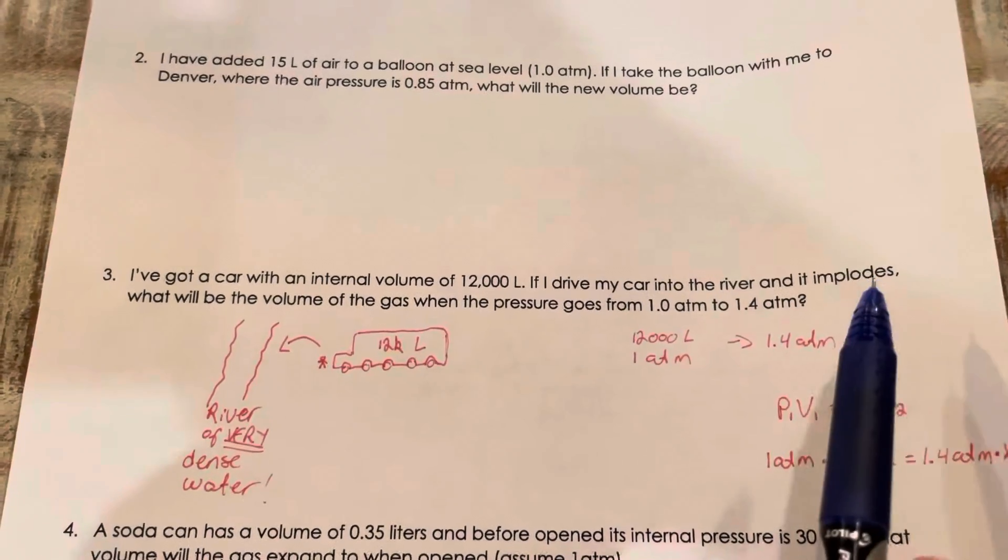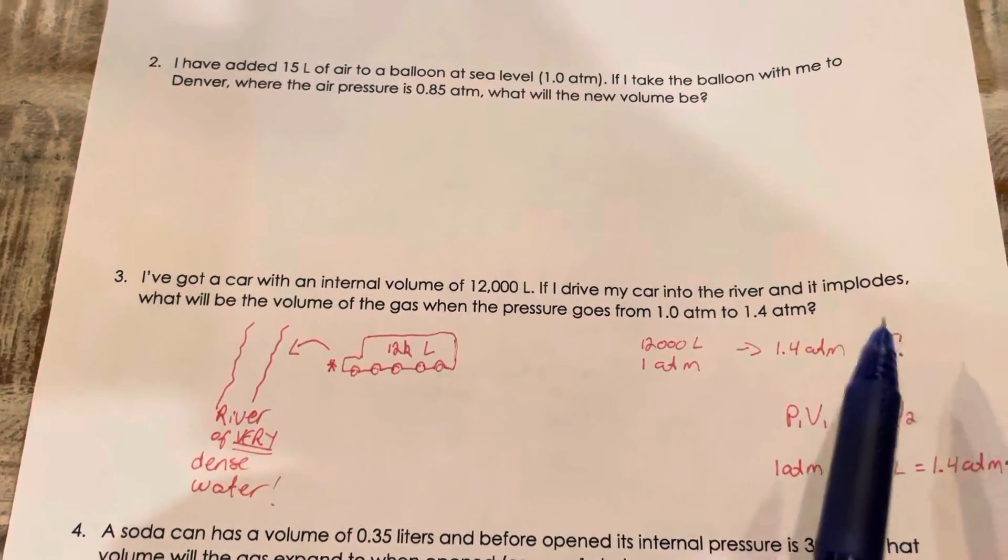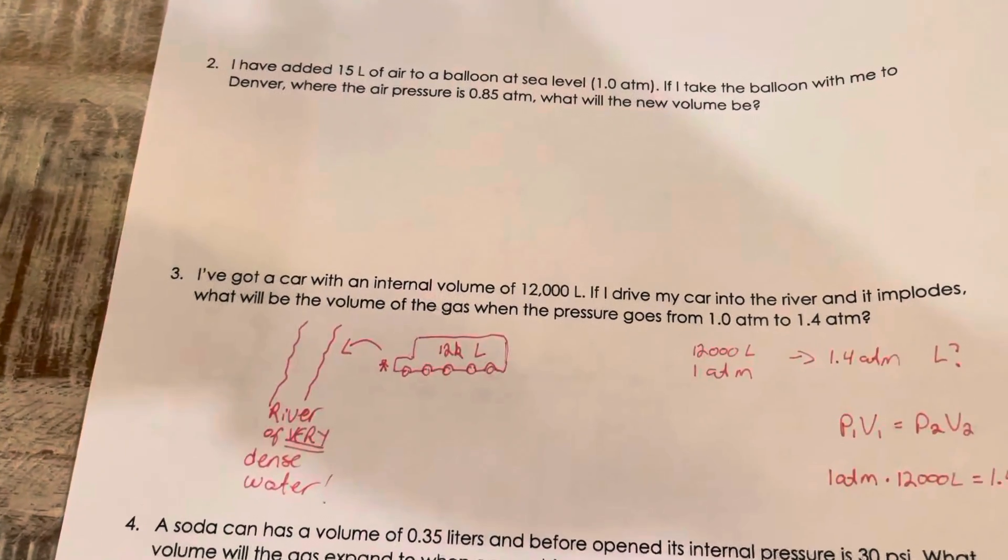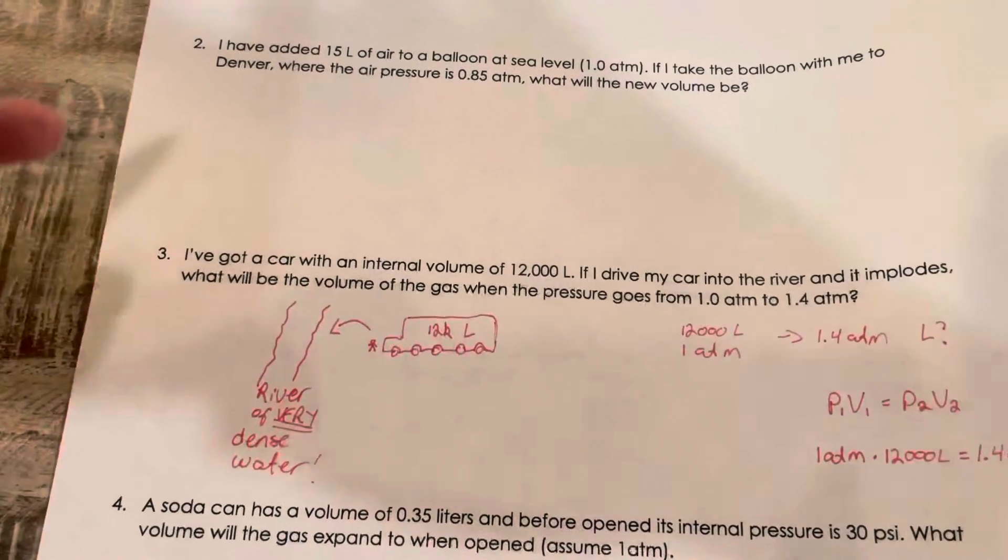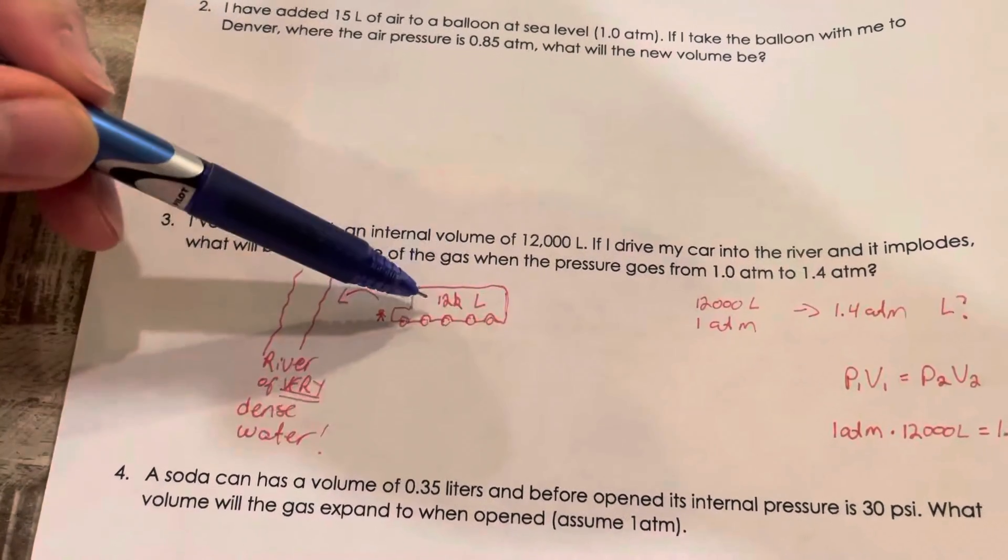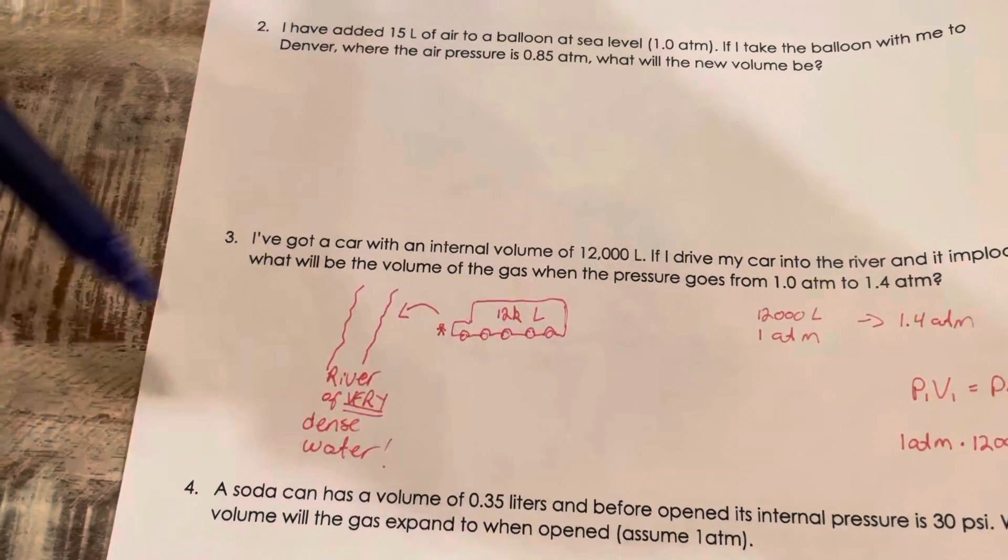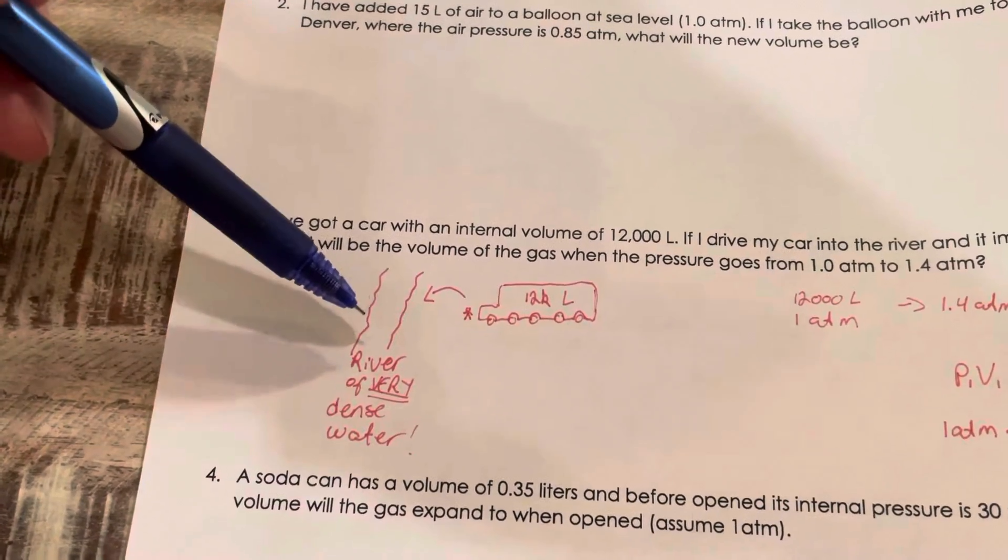And then it tells me it implodes, and we know that if something implodes that means that the outside pressure must be so dense and so much high pressure that it actually makes the walls of the car just cave.